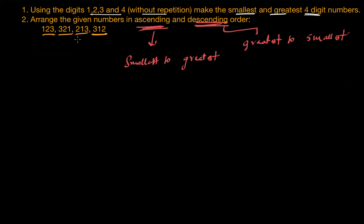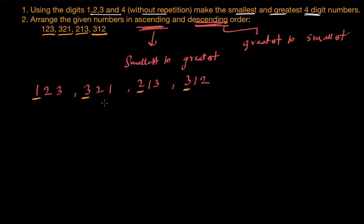Let's see which number is the biggest. Our numbers are 123, 321, 213, and 312. Let's compare at the highest place value — the 100s place — which gives us 1, 3, 2, and 3. The highest digit is 3, but 3 appears in both 321 and 312. So we compare their 10s place: 321 has 2 and 312 has 1. Since 2 is greater than 1, 321 is the greatest value among these four numbers.